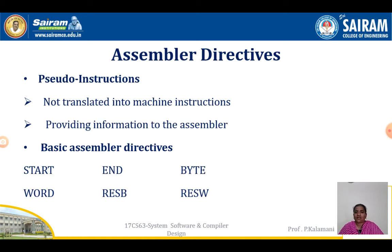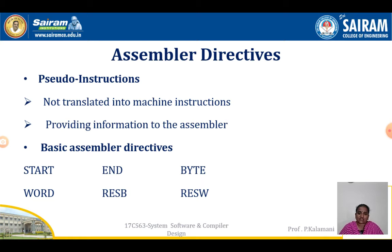First we will see assembler directives. The function of an assembler is converting assembly level language programs into machine code. But some instructions will not be converted into machine language — instead, they give instructions to the assembler. Those instructions are called assembler directives, or pseudo instructions. They are not translated into machine instructions; they provide information to the assembler.